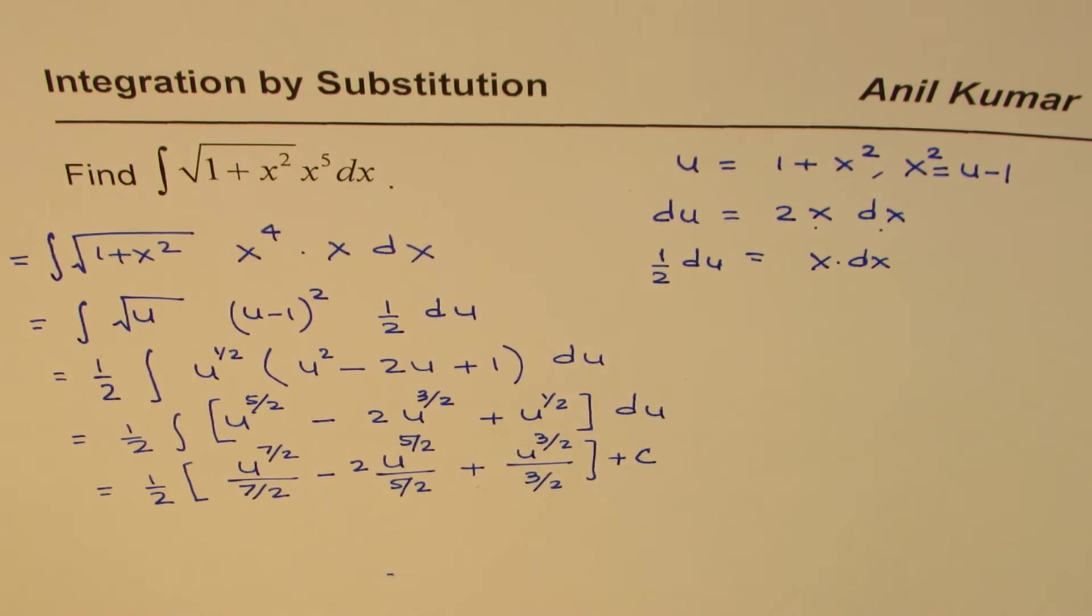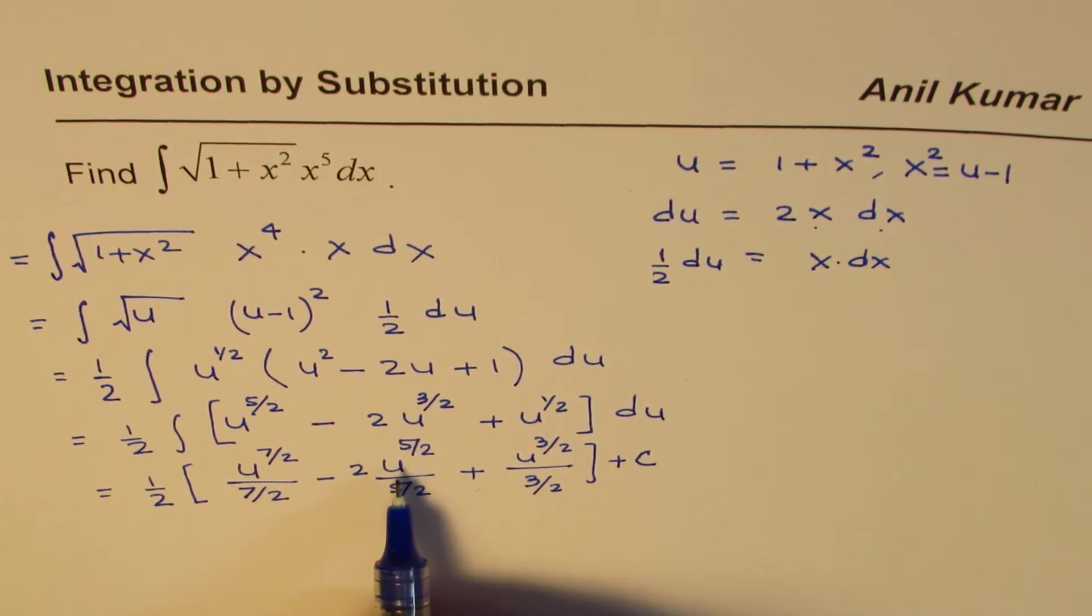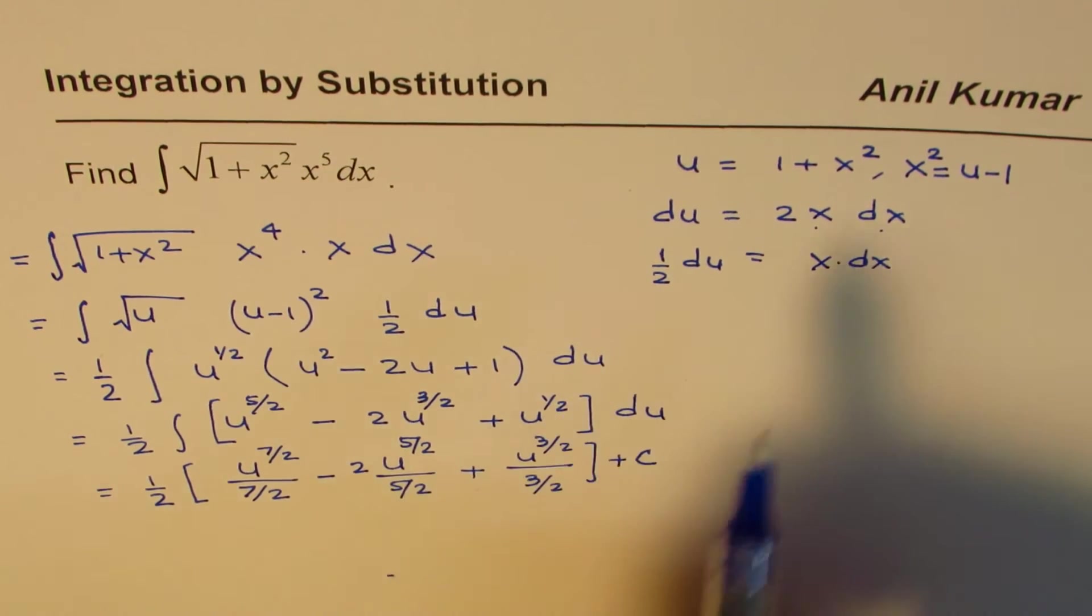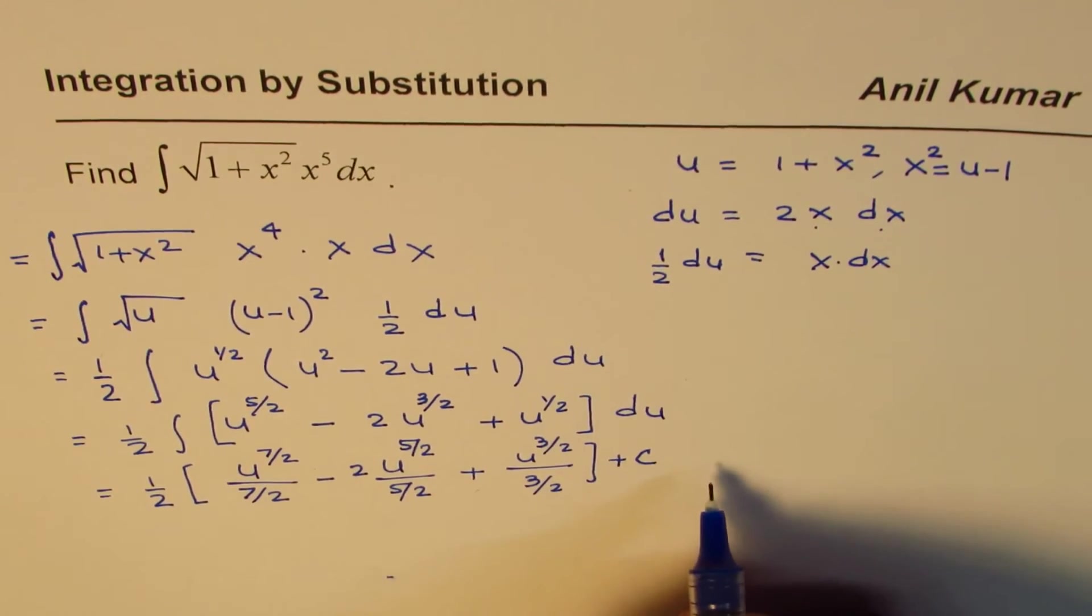So that's how you could actually get the answer. You could simplify this and then write u in terms of 1 plus x squared.